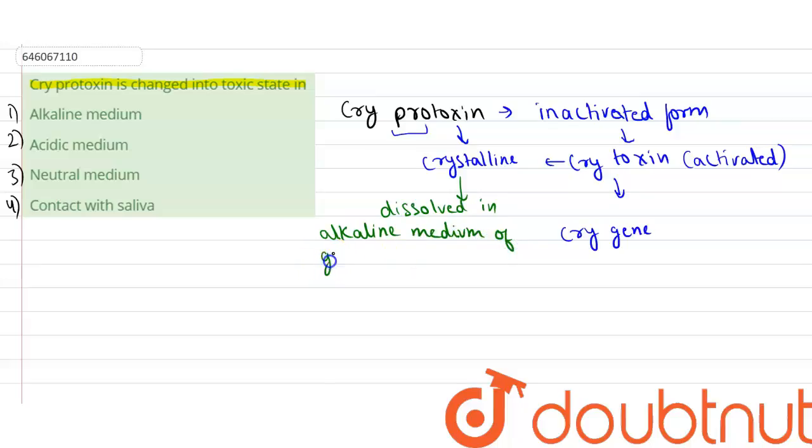Of the gut of insects. Whenever this crystalline toxin reaches the alkaline medium of the gut of insects, the crystal dissolves and it is converted into the activated form known as cry toxin.